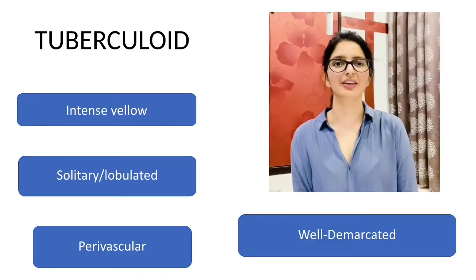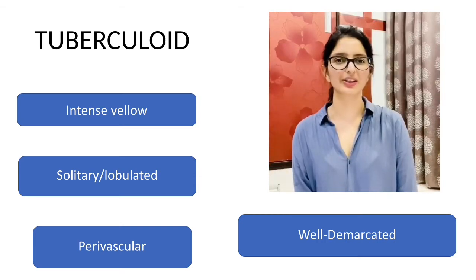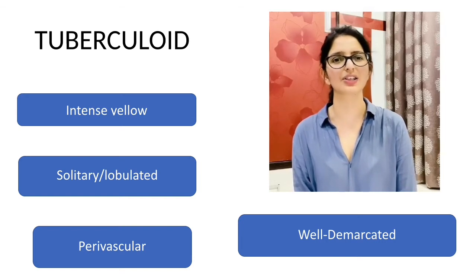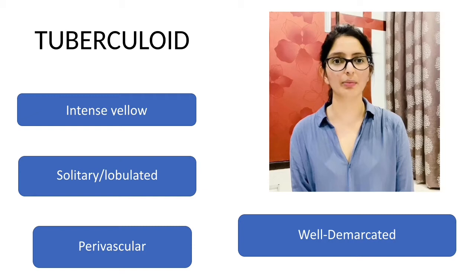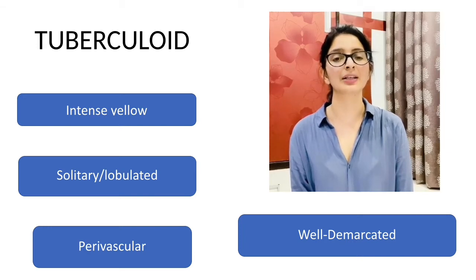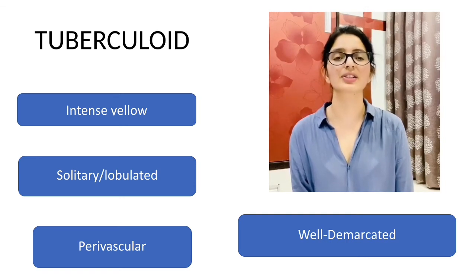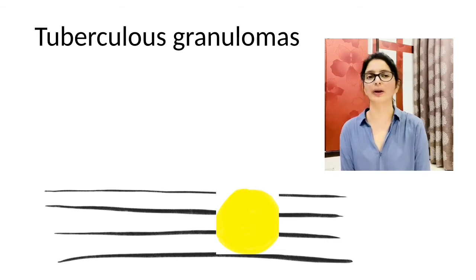Once we are done investigating the patient, let's look at the lesion itself as it can give us a clue. The tuberculosis lesion is usually well demarcated, intense yellow in color, solitary and lobulated in shape. This is because there is high local antigen load which brings about intense inflammation, giving it an intense yellow color and large size. It is usually perivascular in the region, and sometimes there is a lot of subretinal fluid, exudative retinal detachment, and overlying retinal hemorrhages.